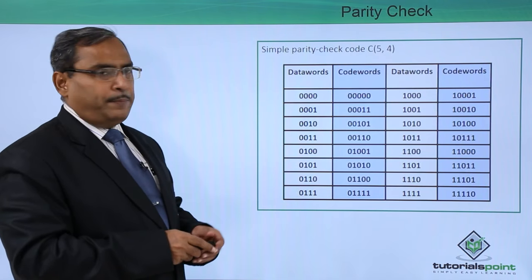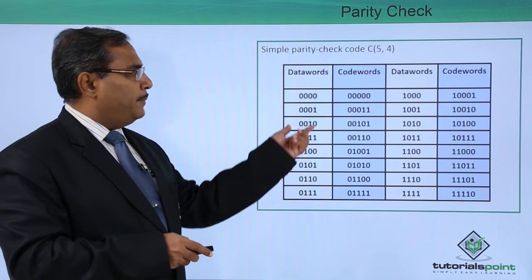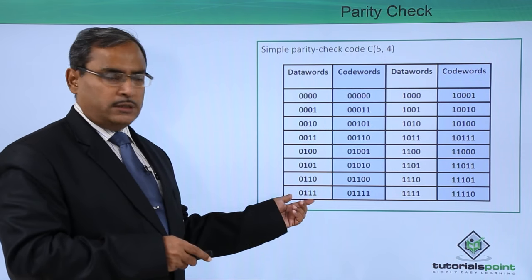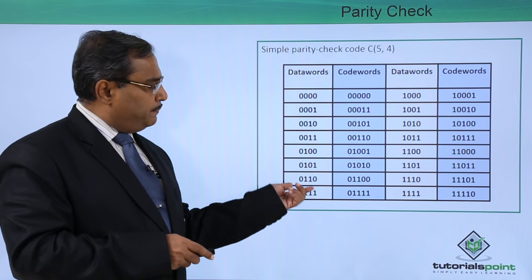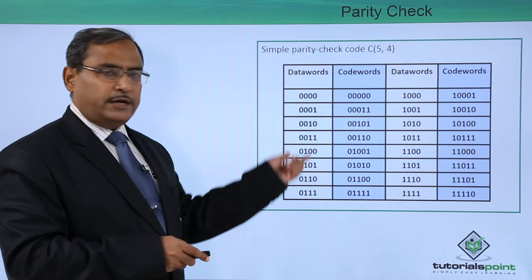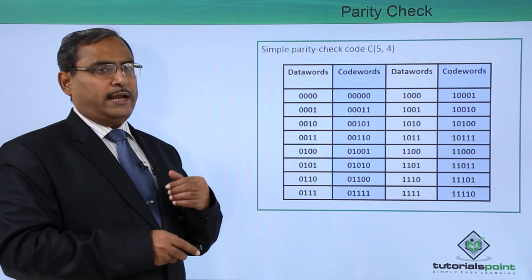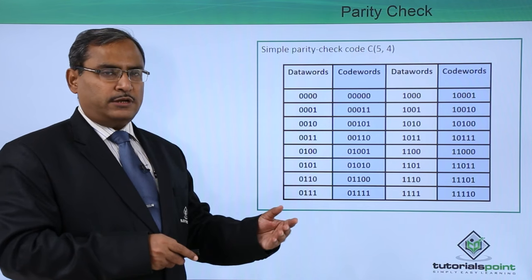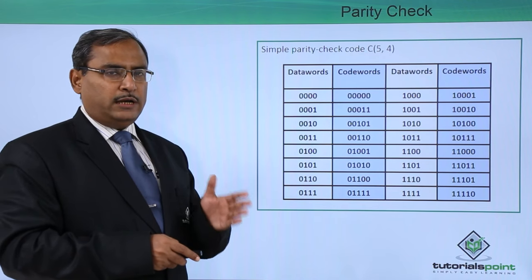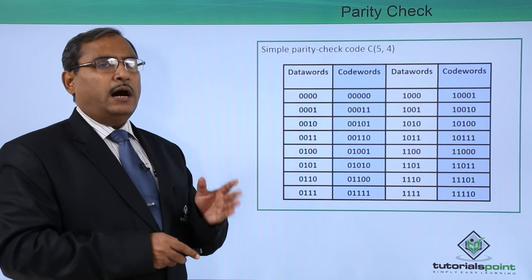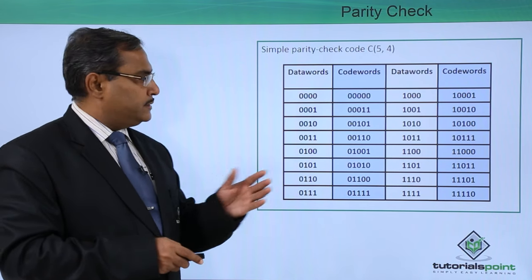So we are going for the parity check. Here we are having the data words. How many bits are there in the data words? Four bits. So we shall add one extra bit, so ultimately we shall have five bits.